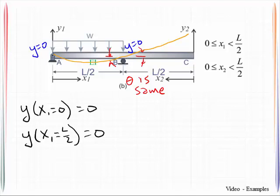Now let's pay attention before we jump into the next segment. Let's make sure we remember that this is my origin over here now. So if I want to describe the displacement at point B, I would have to say Y at X2 equals L over two. We know that displacement is equal to zero.